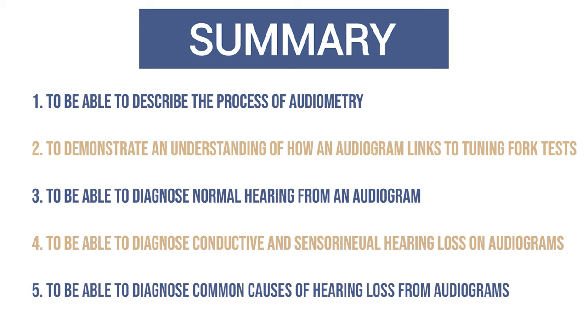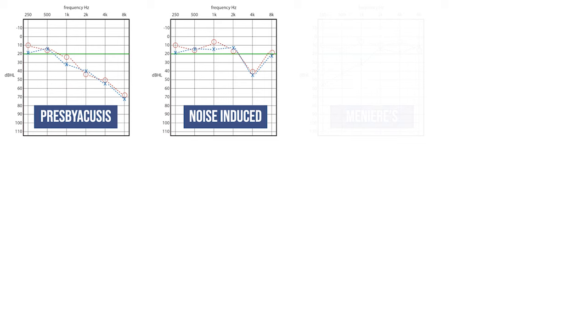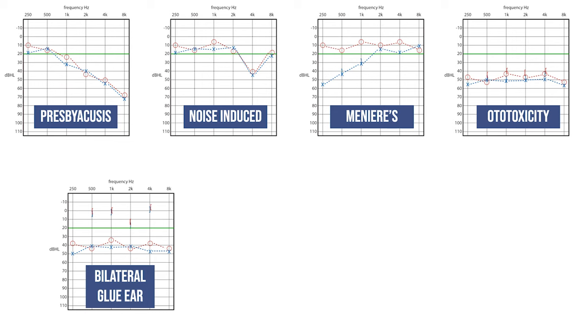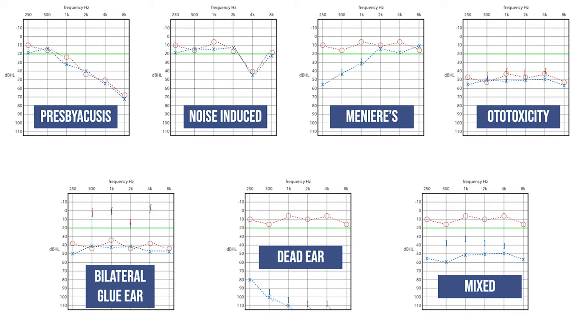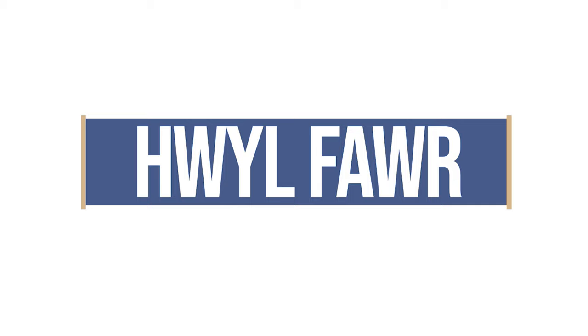Finally, you should be able to diagnose common conditions from their audiograms. Although pattern recognition is key, you should also understand why these conditions produce their characteristic audiograms. Important ones to recognize are presbyacusis, noise induced, Meniere's, ototoxicity, bilateral conductive, dead ear, mixed hearing loss, and not forgetting unilateral sensorineural loss, which could be an acoustic neuroma. That completes this tutorial on audiograms. You should now test yourself with the accompanying assessment. Good luck.